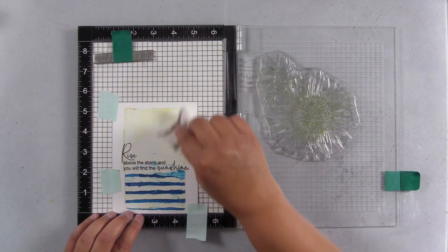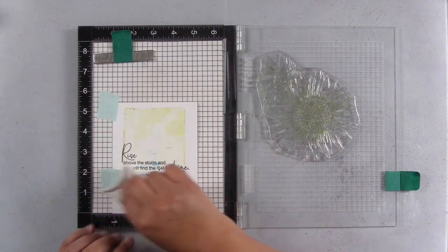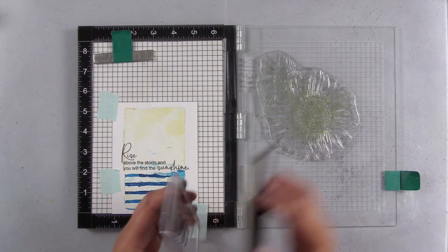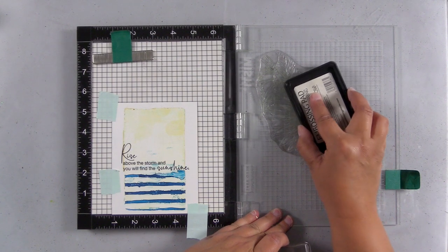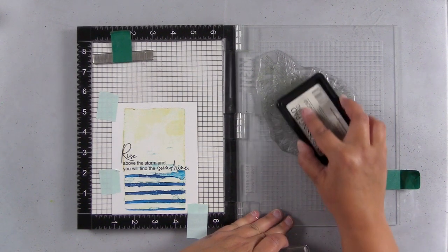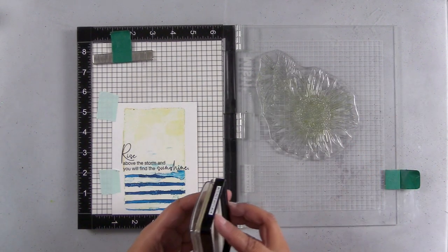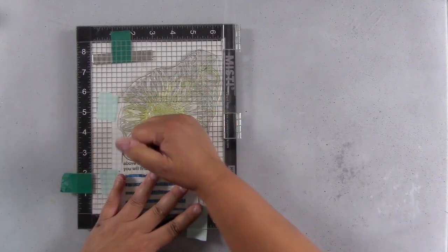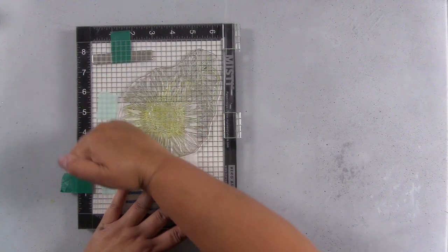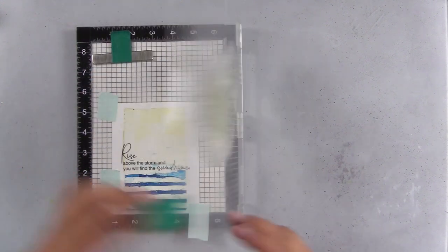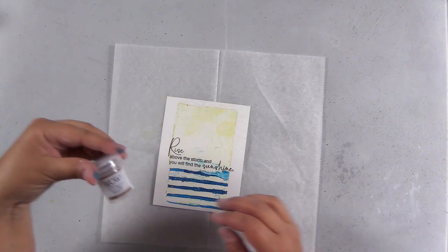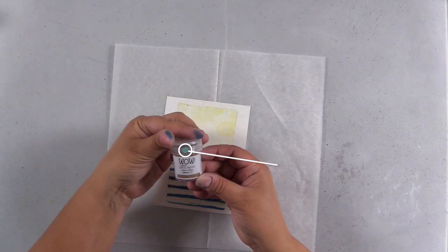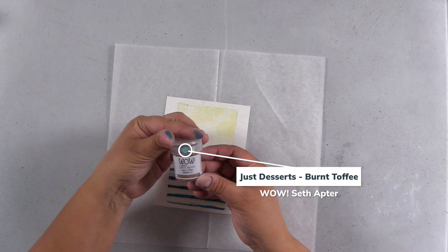In addition to Colorado Craft Company and Yanis Makula donating to the Ukraine, WOW embossing powder also is supporting peace in the Ukraine with their independent trio. All of the proceeds from their independent trio will support the Ukraine humanitarian appeal. This is a donation that will help support families and children.